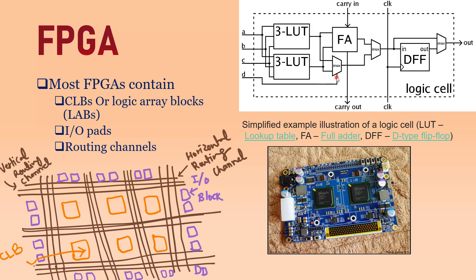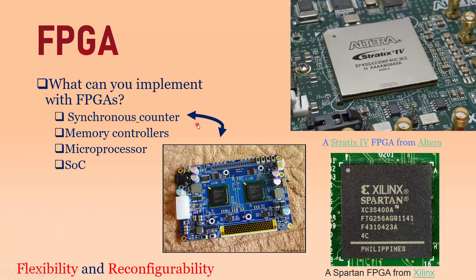This is a simplified example illustration of one logic unit consisting of a LUT, a full adder, and a D-type flip-flop. Moving forward, here is another FPGA board with a manufacturer label and an FPGA chip — an IC — whose internal structure we just covered.